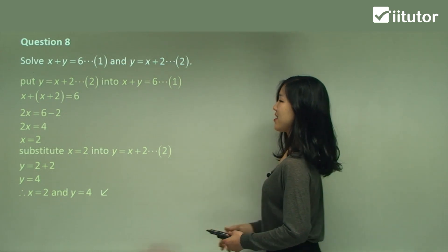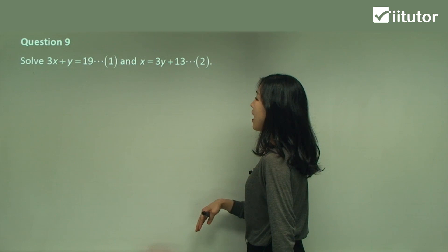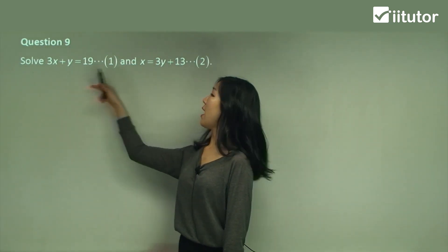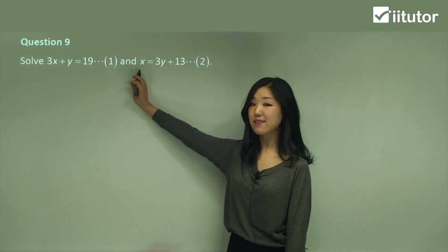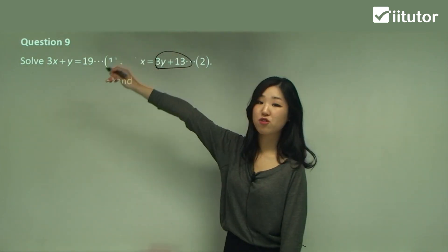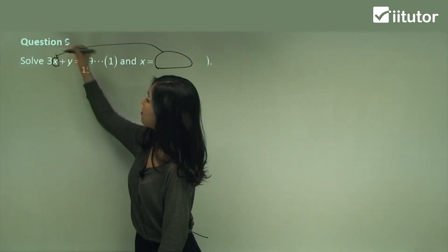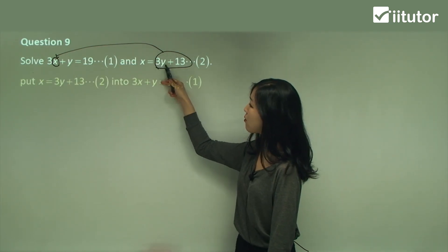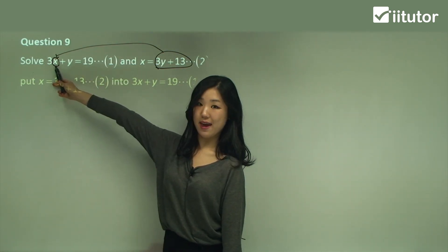Let's try another one — please try it by yourself first. This time we have two equations, and in the second equation x is the subject. So I'm going to substitute that into the position of x in the first equation. See where x is circled — I'm going to put it into there. So I substitute x equals 3y plus 13 into the first equation in the x position.